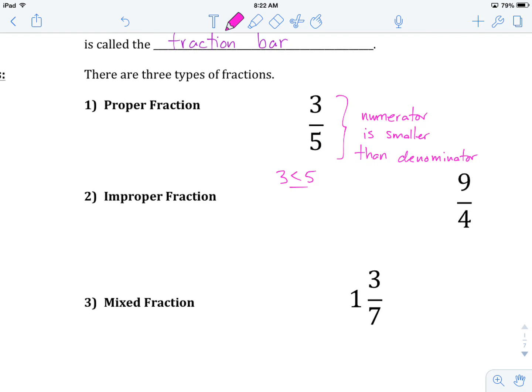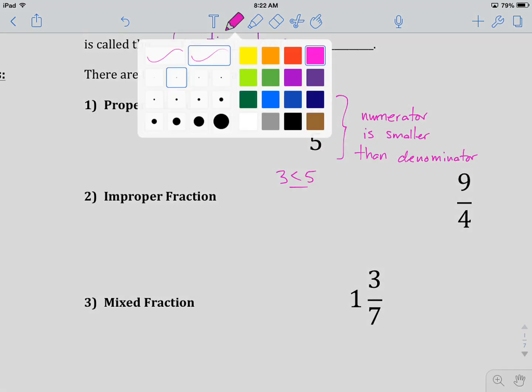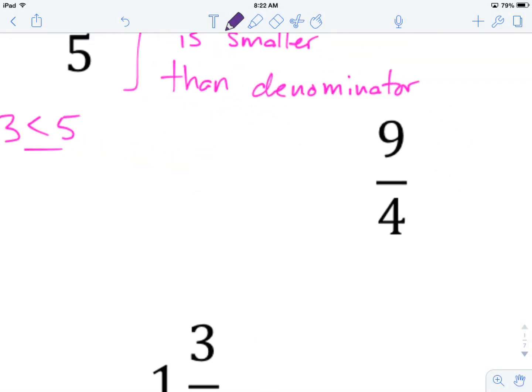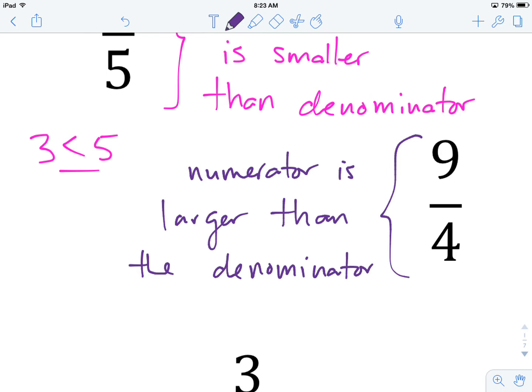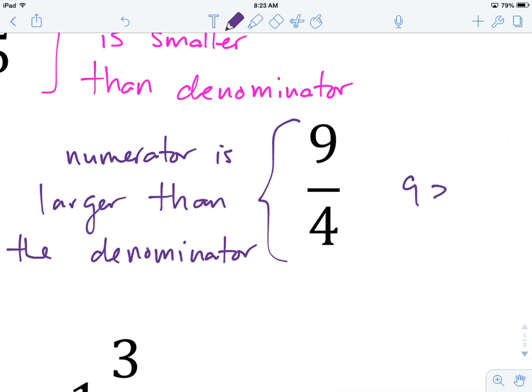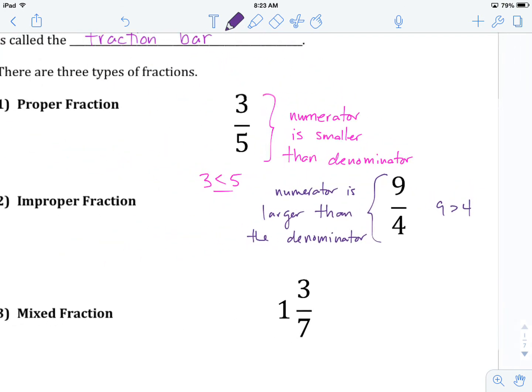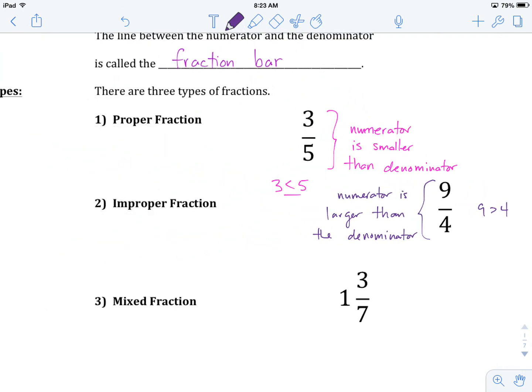Let's move on to the second type, improper fraction. An improper fraction is sort of the complete opposite of that, where you have a numerator that is larger than the denominator. And we can see that in this case, because nine is indeed greater than four. So two types of fractions so far: proper fraction, smaller numerator than denominator; improper fraction, larger numerator than denominator.